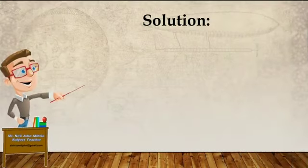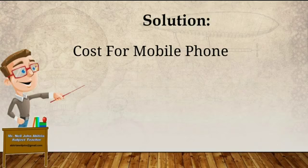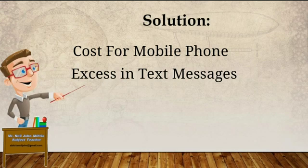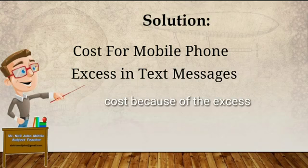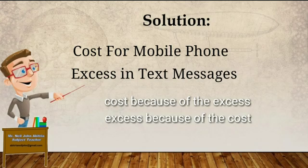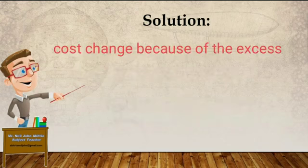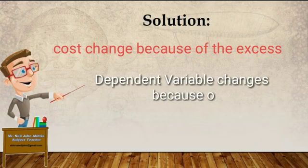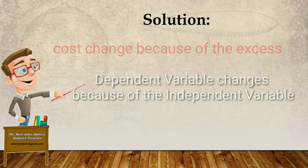First, we need to find what the variables are here. Our variables are cost for mobile phone and excess in text messages. We need to identify the independent and dependent variable. Is it cost changing because of the excess, or excess changing because of the cost? Obviously, the cost changes because of the excess. Did you get it, class?